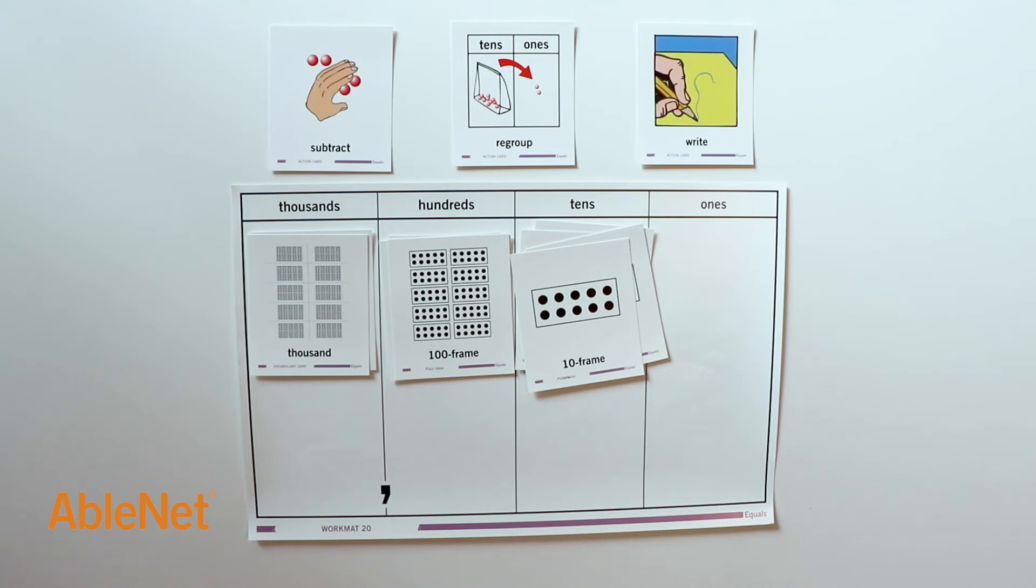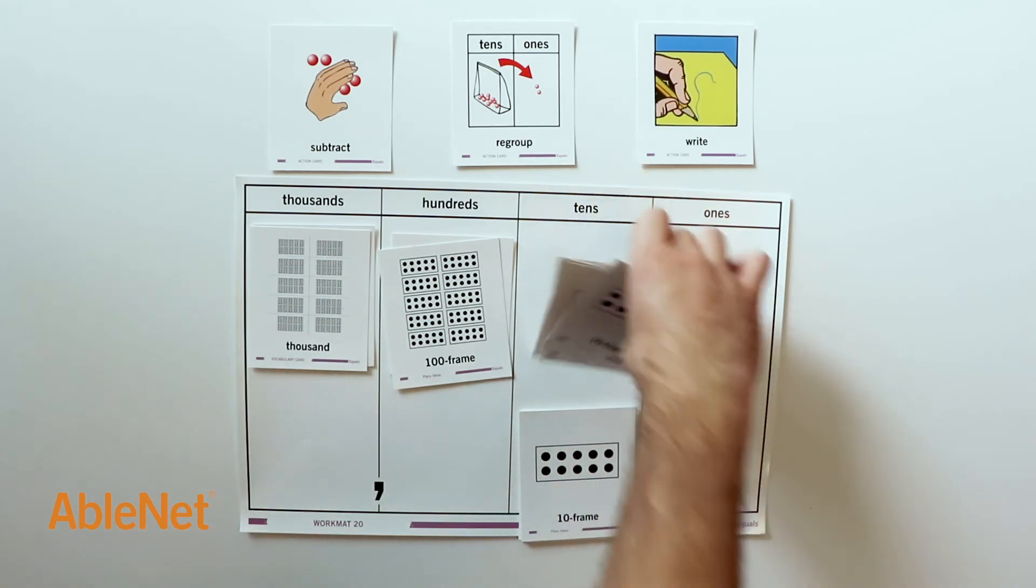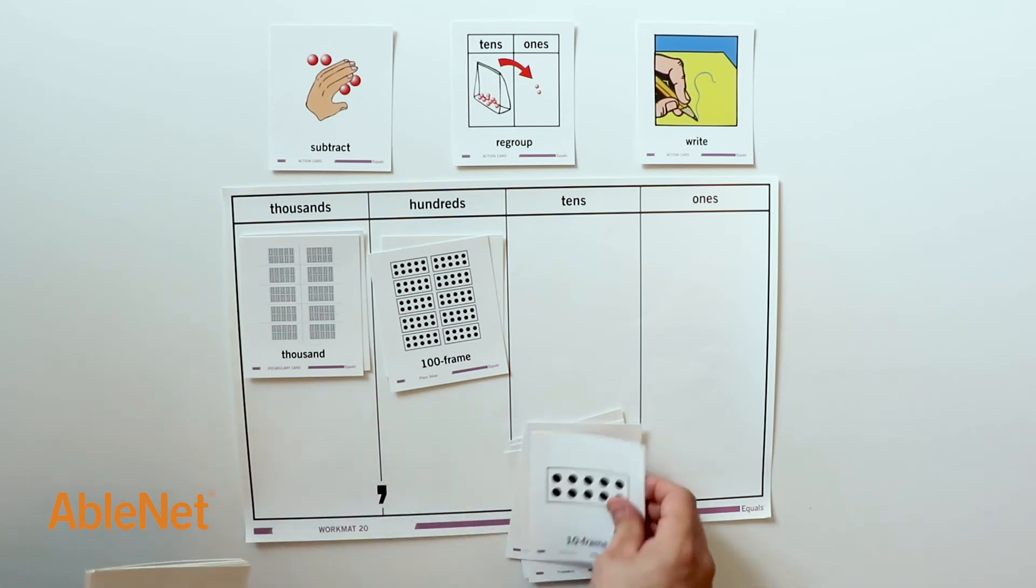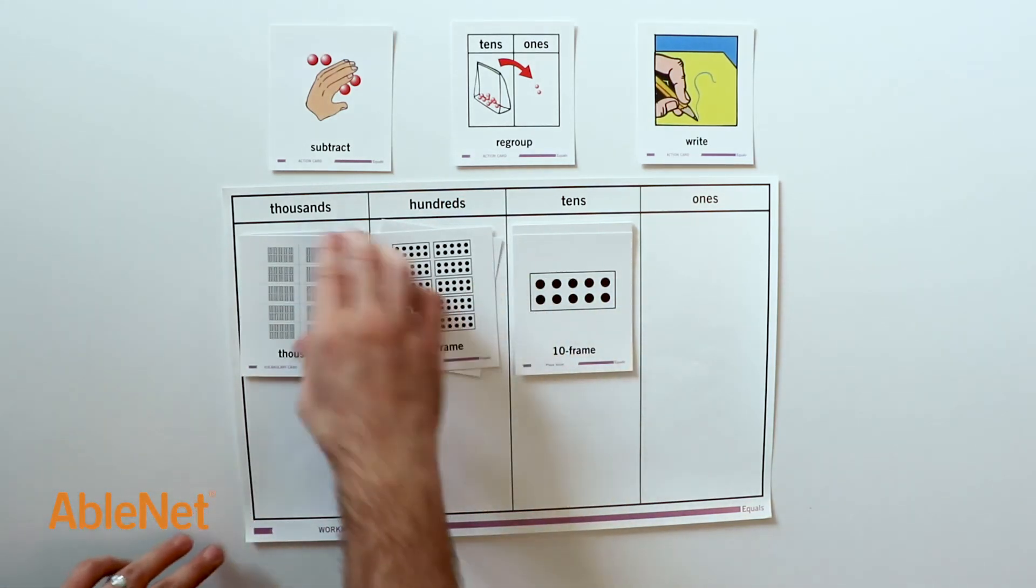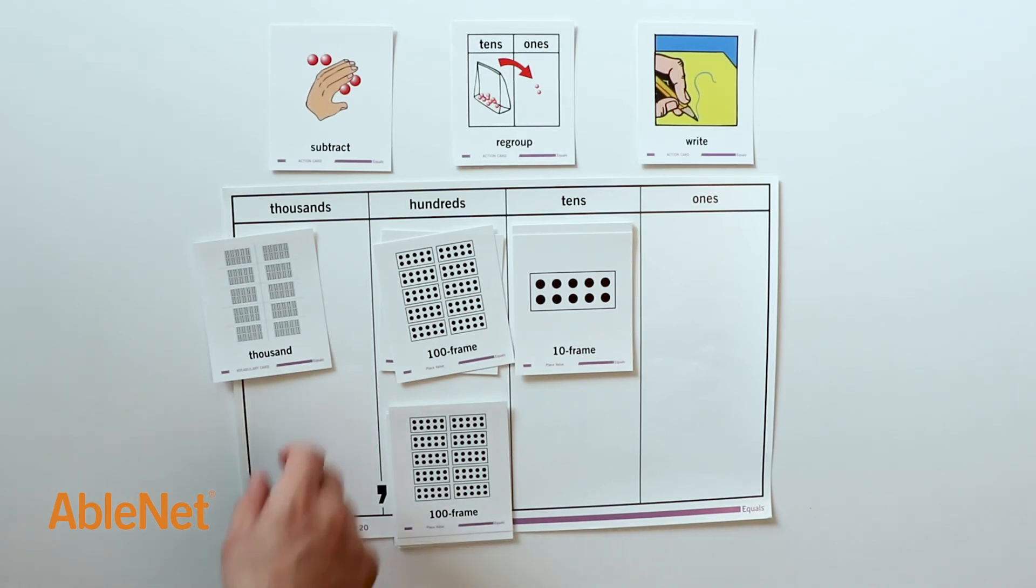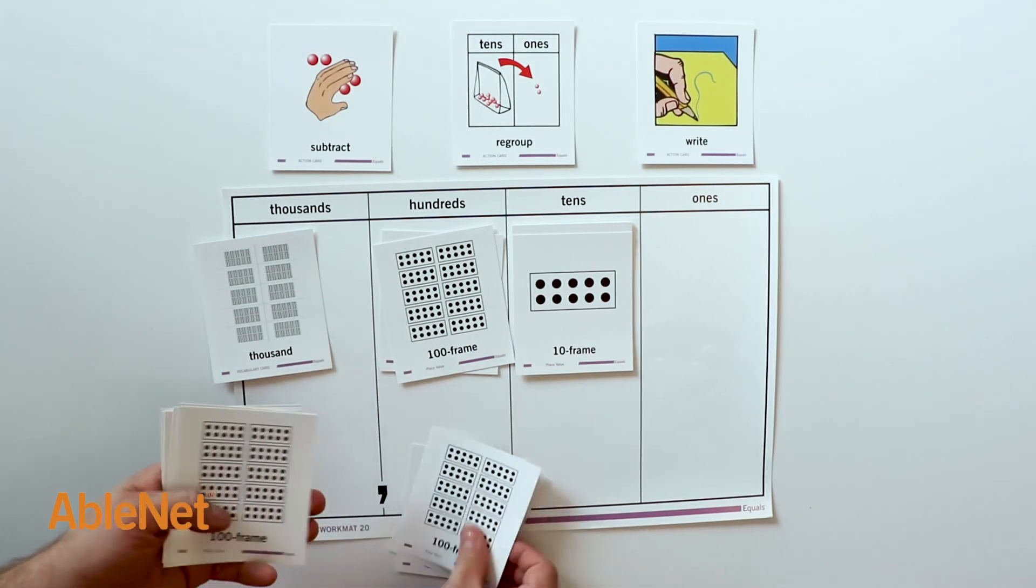I can take a set of 100 from the hundreds place and regroup to the tens place. Now we can subtract. 150 take away 70 is 80. I can also take a set from the thousands place and regroup to the hundreds place. Now we can subtract. 1,200 take away 400 is 800.